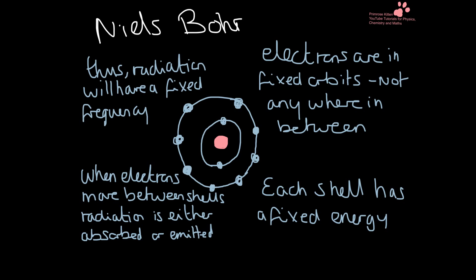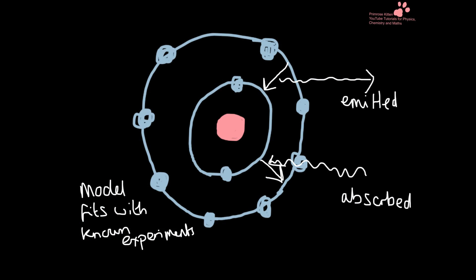Because energy has fixed shells, when electrons move between these shells, radiation is either emitted or absorbed. The radiation emitted or absorbed will have a fixed frequency, so we can work out which shells electrons are moving between. When electrons move down energy levels, light is emitted; when light is absorbed, they move up energy levels.